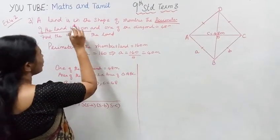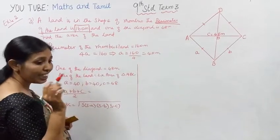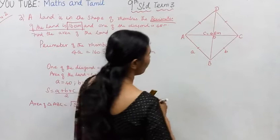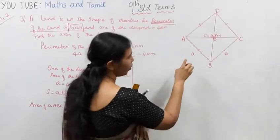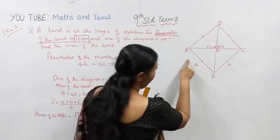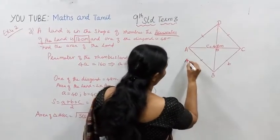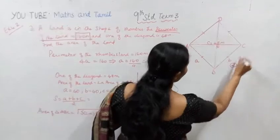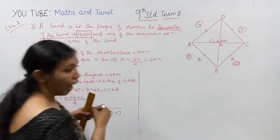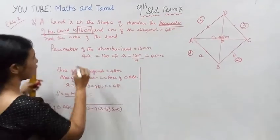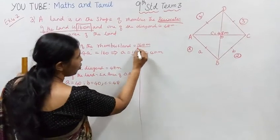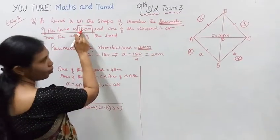The perimeter of the land is 160 meters. For a rhombus, there are four sides: one, two, three, four. The perimeter of the rhombus is 160 meters.